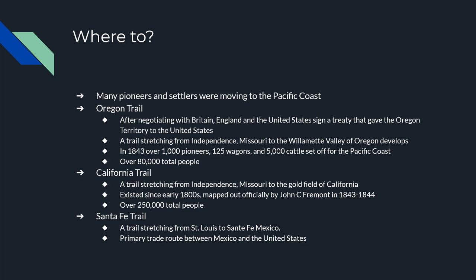The California Trail also started in Independence, Missouri, and went to California. It was officially mapped out by John C. Fremont in 1843, who worked for the Army Corps of Engineers. By the time the California Trail ran its course, over 250,000 people had moved west on it. Then there's the Santa Fe Trail — the least famous of the three but very important. It went from St. Louis to Santa Fe, which is now part of New Mexico but used to be Mexico. It was the primary trade route between Mexico and the United States, and cattle from Oklahoma and Texas were moved to market along it.